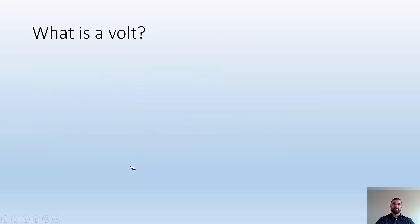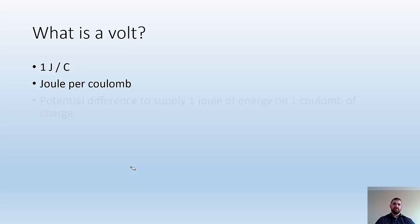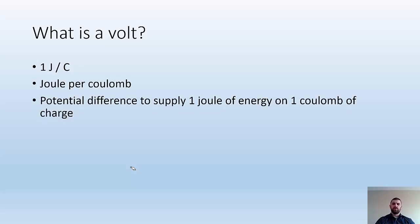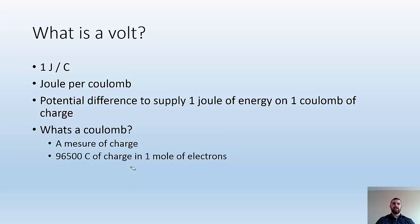What is a volt? Basically, it's just one joule per coulomb — a potential difference to supply one joule of energy per one coulomb of charge. What's a coulomb? Coulomb is just a unit of charge. Basically, you've got 96,500 coulombs in one mole of electrons, and that'll help us out later.